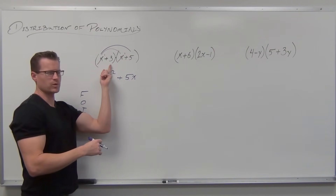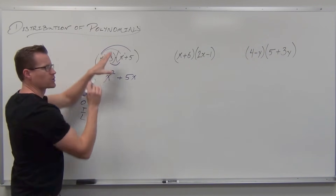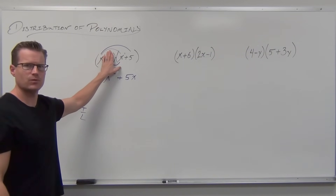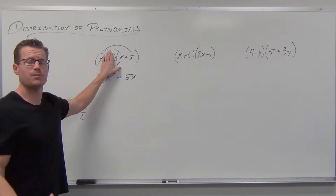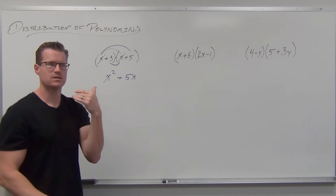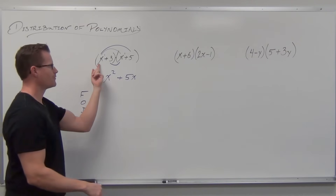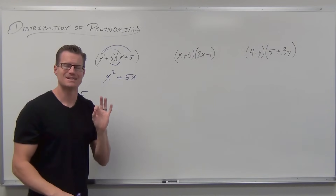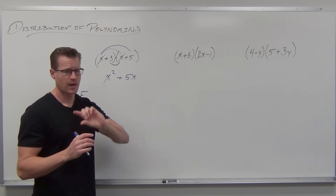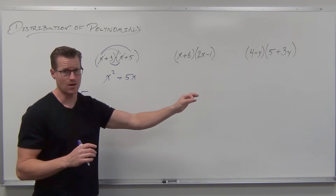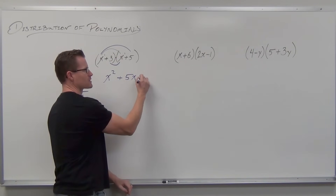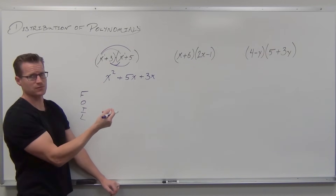But then this second term — that positive 3 — also needs to multiply. Because if you're going to multiply polynomials and you didn't do anything with the 3, that would be exactly the same as just multiplying x — you'd go back to monomials. So now we have another monomial that needs to distribute. Positive 3 times x is positive 3x, so plus 3x. Positive 3 times positive 5 is positive 15, so plus 15.